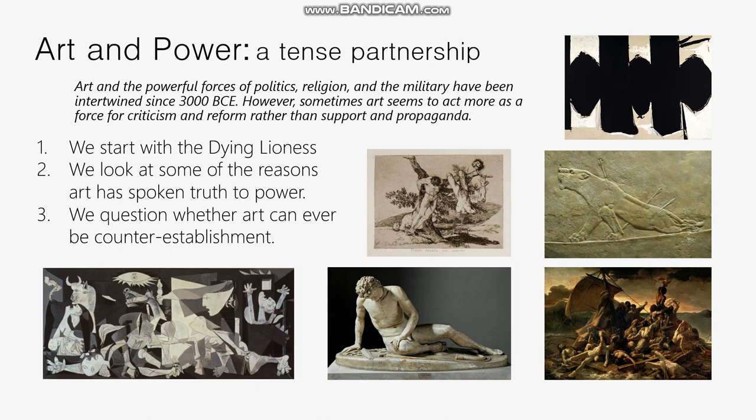Welcome to the last lecture for Unit Six — 'The Art Impulse: Art and Power.' We're talking about the relationship between art and structures of power: powerful people, whether that's kings, democratically elected leaders, or religious powers. Going pretty much all the way back to ancient Egypt, you really can't separate art from the political powers that needed it for political purposes.